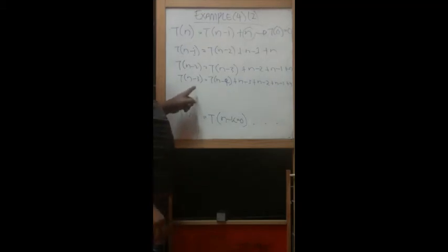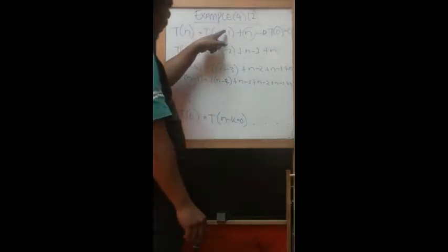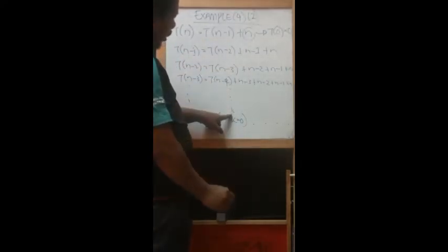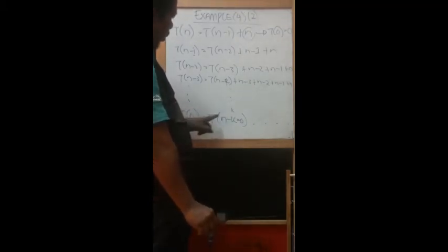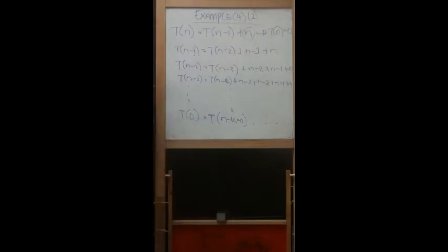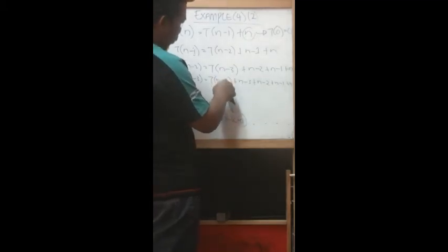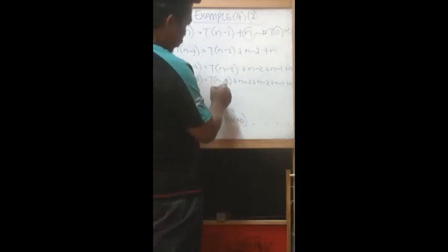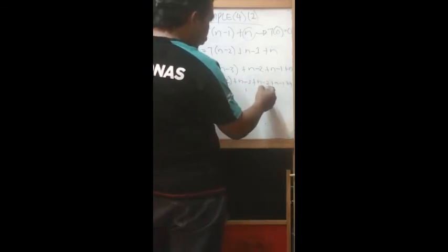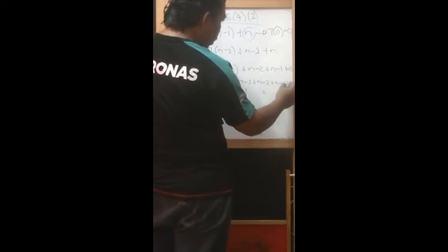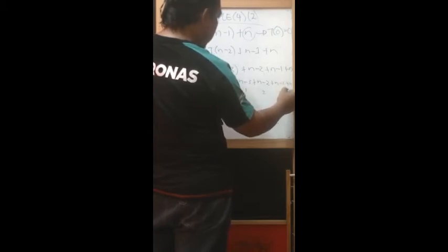Looking at the iterations 1, 2, 3 until k, our main focus is how to stop. We need to stop at 0, where n minus k equals 0. Look at this: if we take k equals 4, for example, we want to stop at 0. We stop at T(4-4) which is T(0), and we have (4-3), (4-2), (4-1), and 4. The pattern goes from 1, 2, 3 until n.